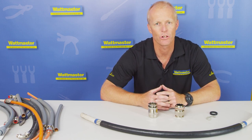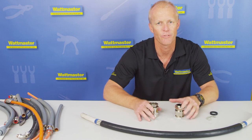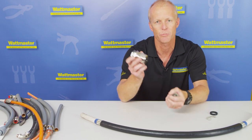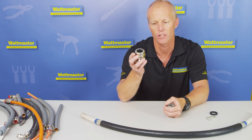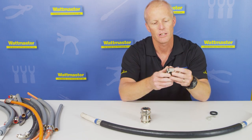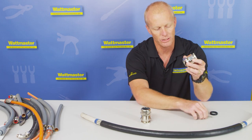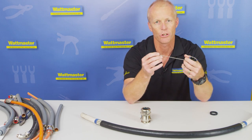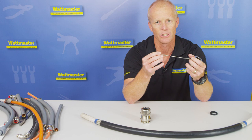At Wattmaster we have two styles with the Alco glands. We have the EMC type finger gland, it's Generation 5, and we have the premium Alco gland that we terminate and it uses a 360 degree bead type sealing on the cable.